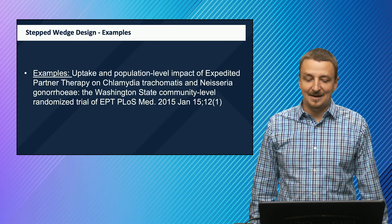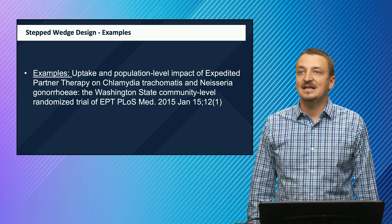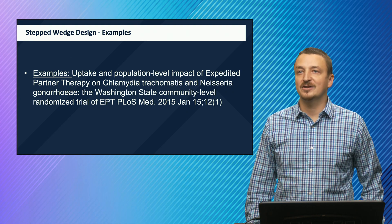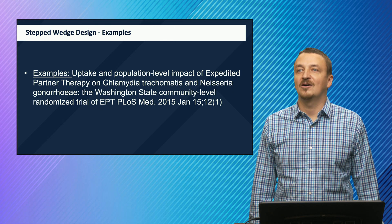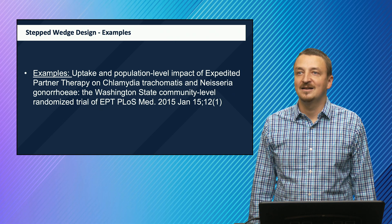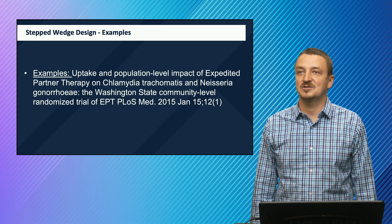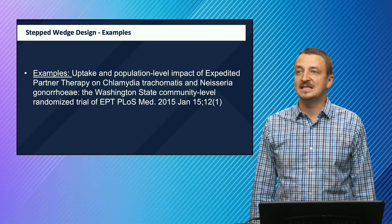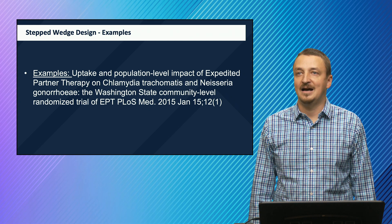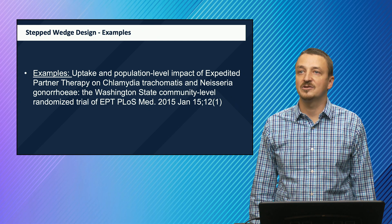One example of a stepped wedge design is the Washington State community-level randomized trial examining uptake and population-level impact of expedited partner therapy on Chlamydia trachomatis and Neisseria gonorrhoeae. The referenced publication shows how the stepped wedge design was implemented in that study.